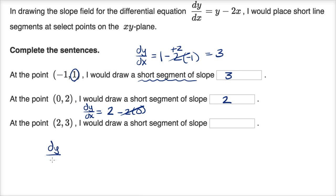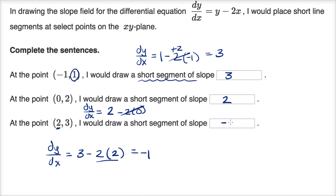For the third point, the derivative of y with respect to x is equal to y, which is three, minus two times x. X here is two, so two times two is four. Three minus four is equal to negative one. And that's all that problem asks us to do.